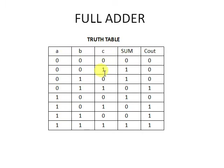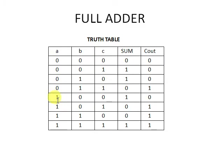A shortcut to understand the sum output: if an odd number of ones appear in the inputs, the sum output is one. For example, if only C is one that is one '1', the output is one. If A and C are zero and B is one, the output is one. But if B and C are both one — two ones, which is even — the output is zero. Wherever there is an odd number of ones in the inputs, sum will be one.